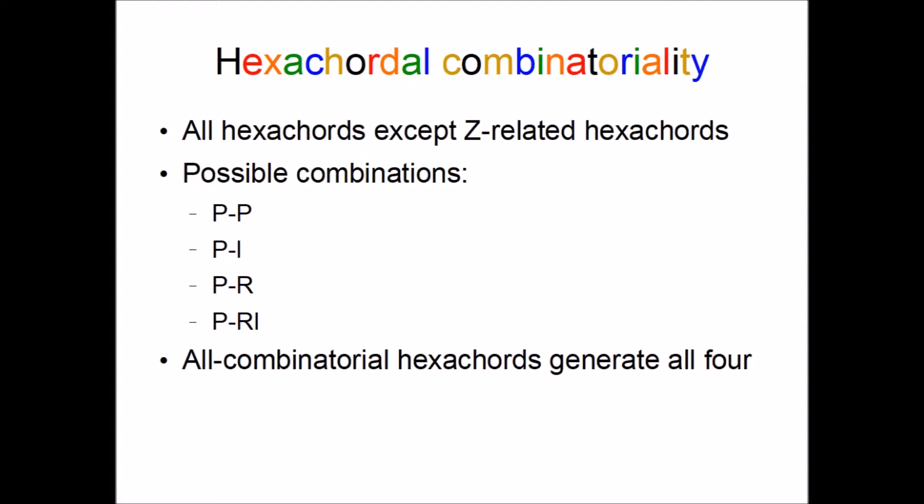The possible combinations are prime prime, prime inversion, prime retrograde, and prime retrograde inversion. The six hexachords that can generate all four types are called all combinatorial hexachords, which I will discuss in the next video.